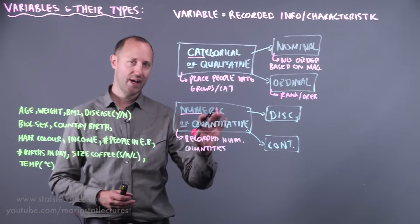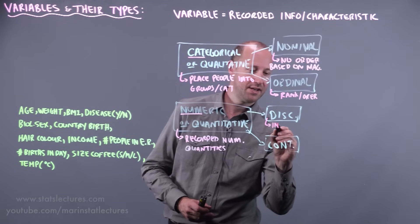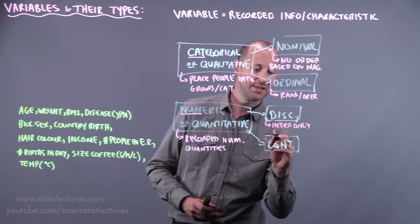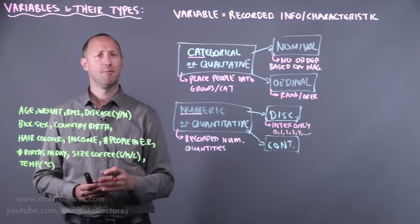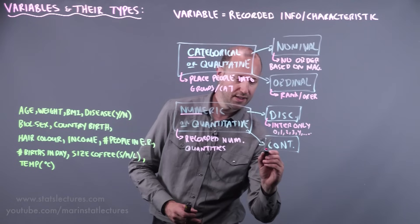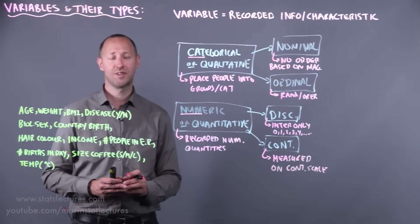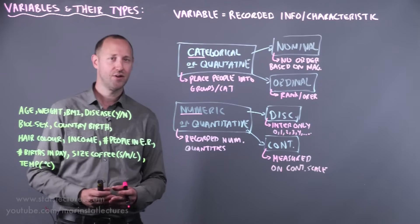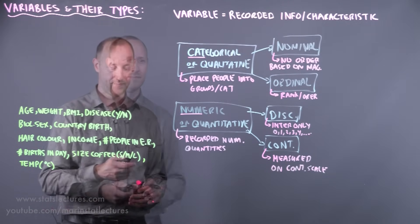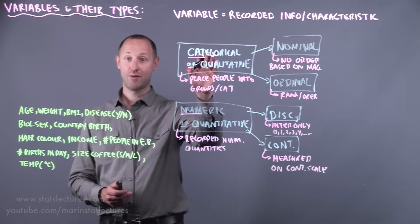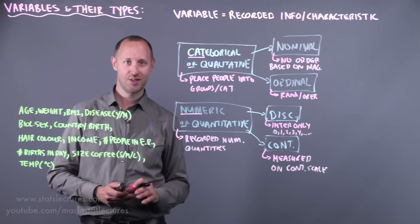Numeric variables can be further broken down into discrete (abbreviated disc) or continuous (abbreviated cont). Discrete variables tend to take on integer values only — 0, 1, 2, 3, 4 — and in theory can go up to infinity; for example, the number of people in an emergency room. Continuous variables are measured on a continuous scale — for example, weight is often reported to the nearest pound or kilogram, but it's actually measured continuously: your weight could be 57.258 kilograms. You may want to pause and try classifying the example variables yourself before continuing.